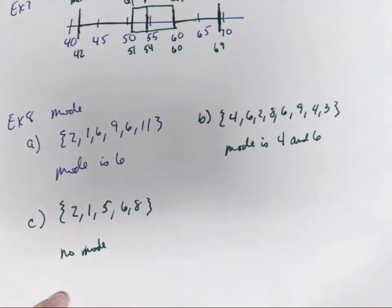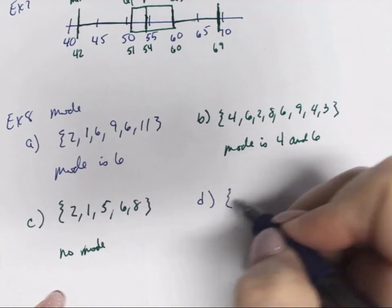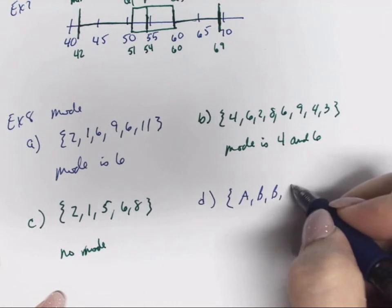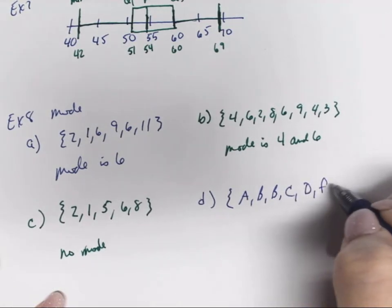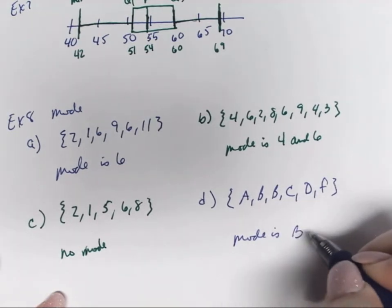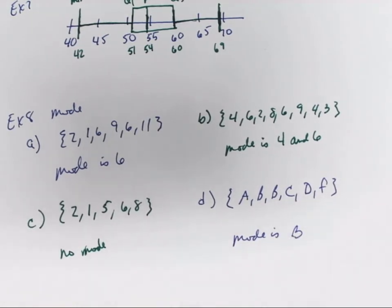If we look at this data set, we have A, B, B, C, D, and F. Here, our mode is B. So it doesn't have to be a number. It can actually be a letter, and it's B because it occurs twice.